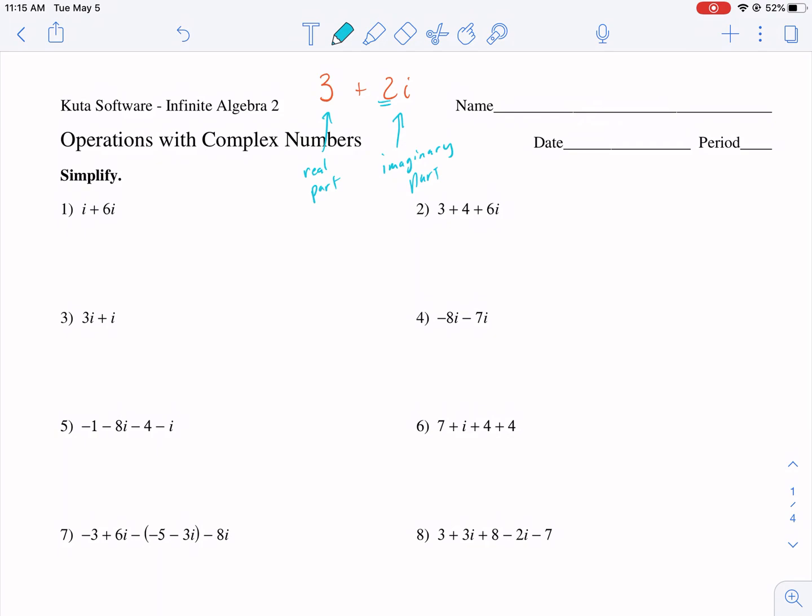Okay, so just the two is the imaginary part, but the reason why it's imaginary is because it has an imaginary number attached to it. So the imaginary number is i, and that is the square root of negative one.